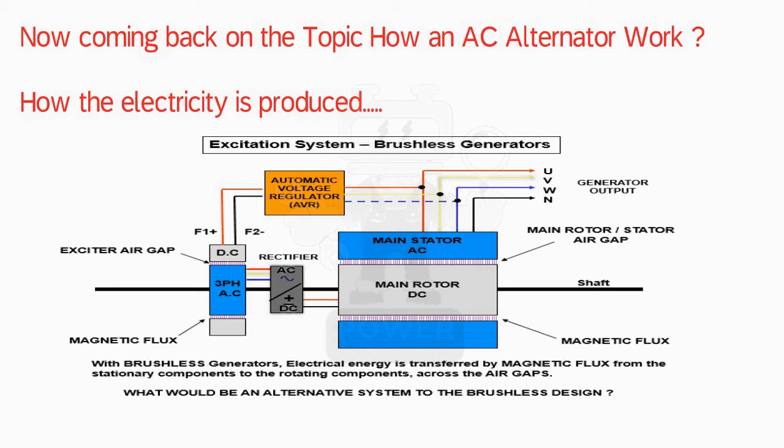The exciter stator produces a DC electromagnet in the coils. Across the exciter air gap we have the exciter rotor, which has three-phase winding. This three-phase output goes to the rectifier assembly — the rectifiers take AC supply as input and give out DC supply to the main rotor. The main rotor then becomes an electromagnet with poles, producing magnetic flux across the air gap. As the main rotor moves inside the main stator, the windings in the main stator are cut by the electromagnet, and electricity is produced.